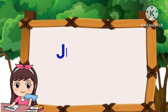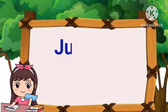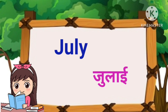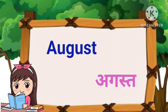J-U-N-E. June. June means June. J-U-L-Y. July. July means July. A-U-G-U-S-T. August. August means August.